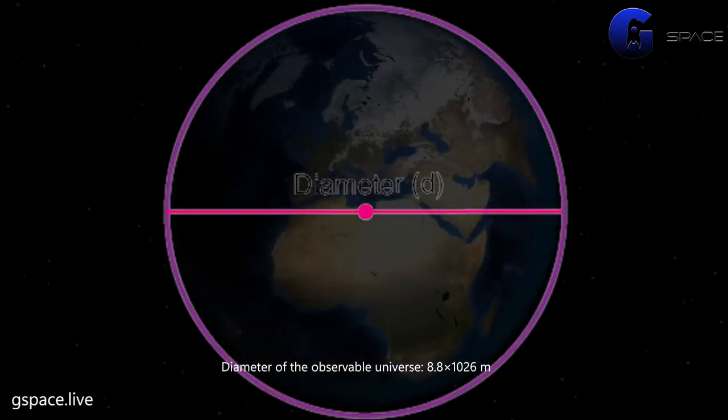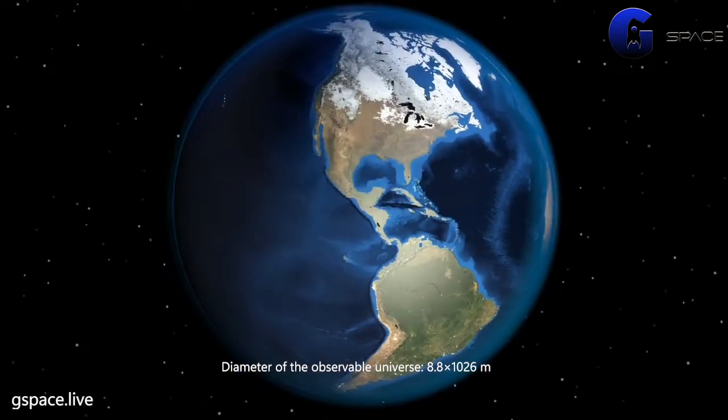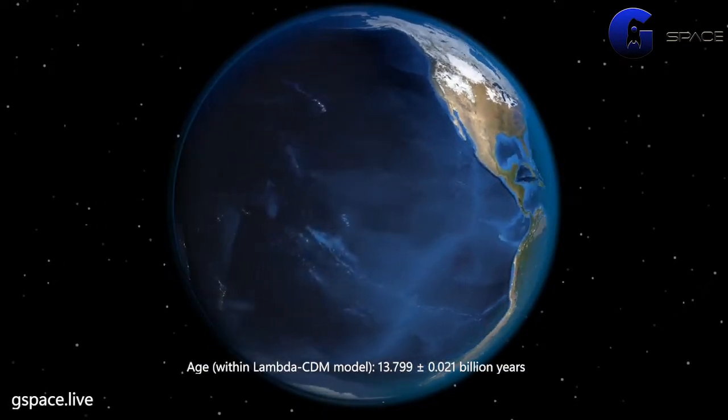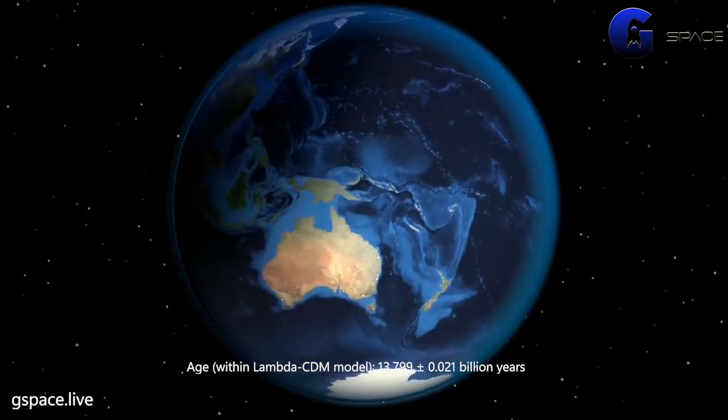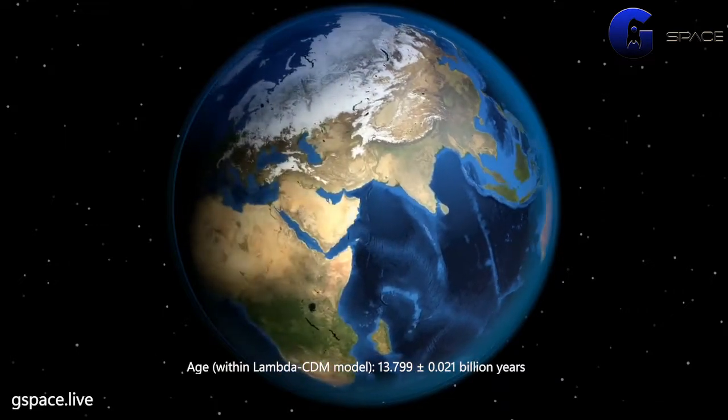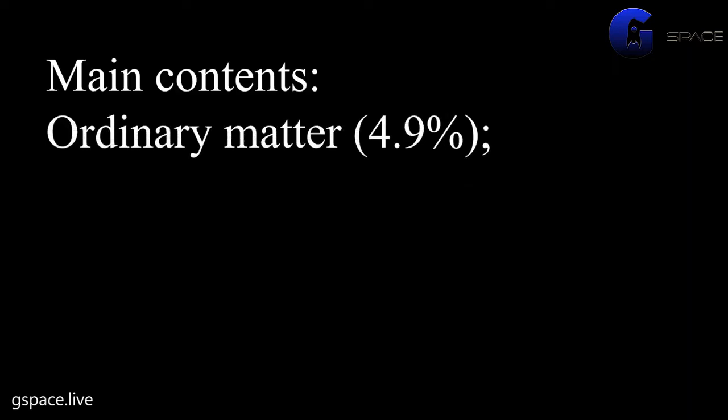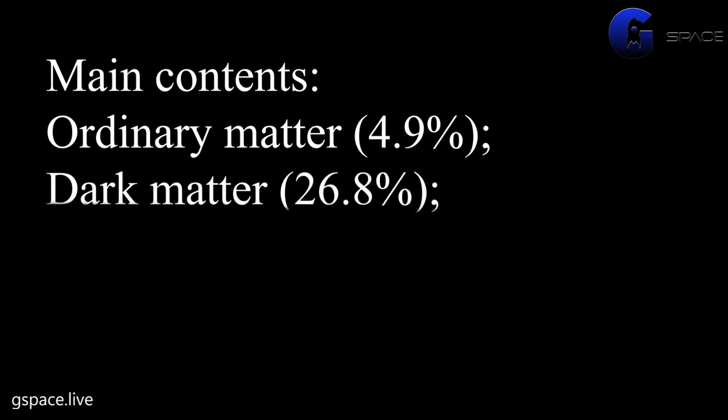Diameter of the observable universe: 8.8 × 10²⁶ meters. Age within Lambda-CDM model: 13.799 ± 0.021 billion years. Average density: 9.9 × 10⁻³⁰ grams per centimeter cubed. Main contents: ordinary matter 4.9%, dark matter 26.8%, dark energy 68.3%.